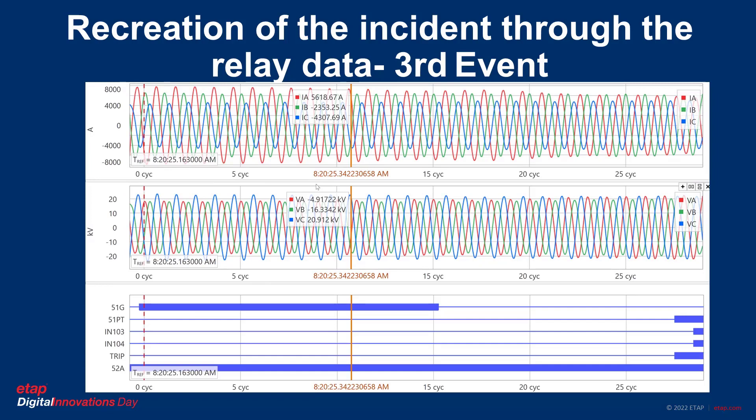Here we go with event number 3. We still have a three-phase fault. However, right at the end of the event, the trip is finally initiated. 52A is still on because it takes time for the breaker to open — it was a 3-cycle breaker. Notice that at the end, there are new digital data that were not present before: Input IN-103 and Input IN-104. They are related to heat or temperature sensors. Not a good thing.